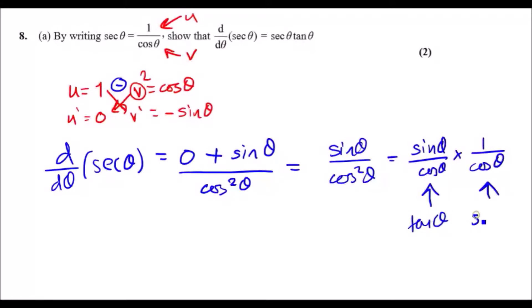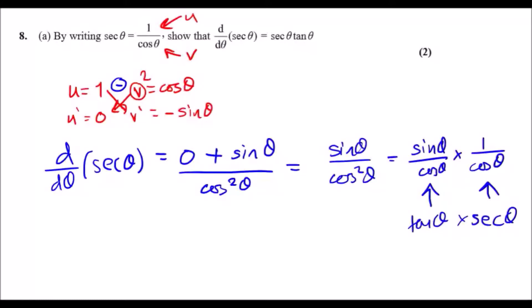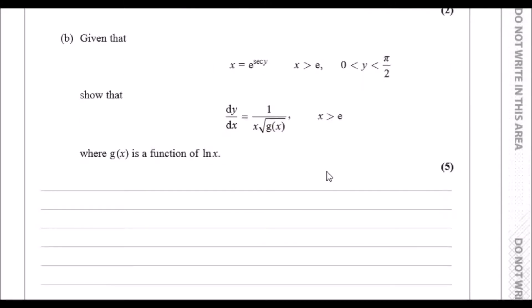Okay, let's move on to part b. Given that x equals e to the sec y, show that dy/dx equals the right hand side where g(x) here is a function of ln x.